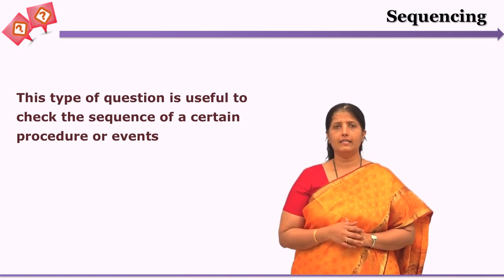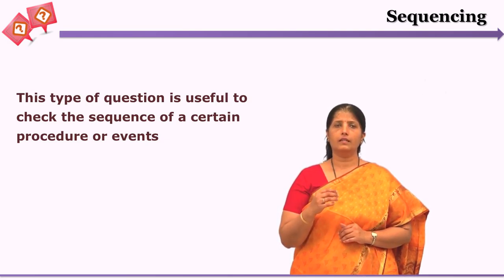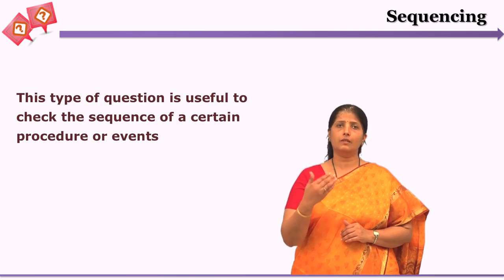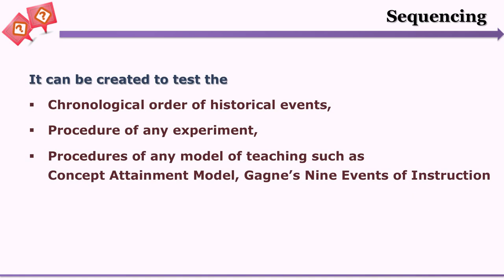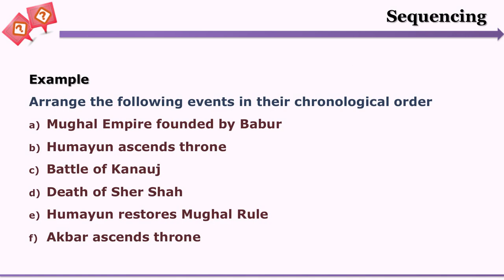The next objective question type is sequencing. Here the learner is given certain events or steps of a procedure and puts them in sequence. This is ideal for chronological order of historical events, procedures of experiments, or procedures of teaching models such as the concept attainment model or Gagne's nine events of instruction. Example: arrange the following events in chronological order — (a) Mughal empire founded by Babur, (b) Humayun ascends throne, (c) Battle of Kanauj, (d) Death of Sher Khan, (e) Humayun restores Mughal rule, (f) Akbar ascends the throne.